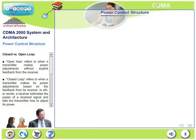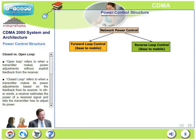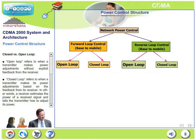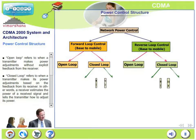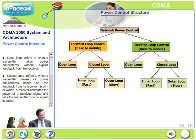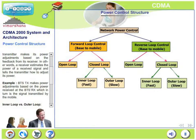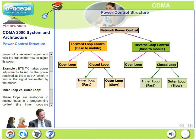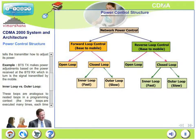Having understood the need for power control, let us look at the power control structures available in CDMA. Closed loop versus open loop: open loop refers to when a transmitter makes power adjustments without explicit feedback from its own receiver — the transmitter makes unilateral decisions. Closed loop refers to when a transmitter makes its power adjustments based on specific feedback from its receiver. A receiver estimates the power of a received signal and tells the transmitter how to adjust its power. For example, a base station transmitter may make power adjustments based on the power received at its base station receiver terminal, which is the signal transmitted by the mobile.